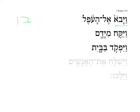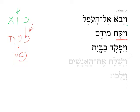Vayavoh comes from Bet-Vav-Aleph; it's a hollow root because of the Vav as a middle root letter. Vayikach comes from Lakach, and in this case it functions as though it were a Pei-Nun — the first root letter acts like a Nun. We can see this Lamed has assimilated into the Kof, the same way a Nun would. And then Vayivkhod, from Pei-Kof-Dalet. All three of these verbs are Kal, Vav-consecutive, imperfect, 3MS.